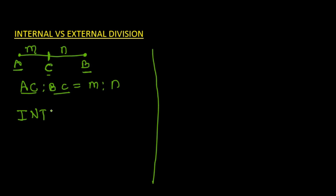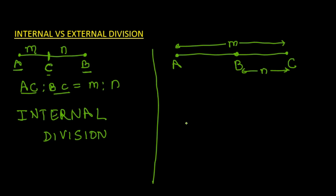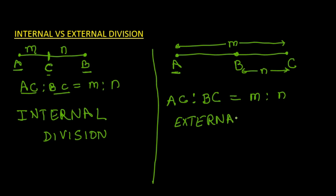Now if the point divides externally — if this is line AB and the point is lying outside the line — dividing externally in the ratio m:n means the ratio of the distance of endpoint A from the point of division to the distance of endpoint B from the point of division. This kind of division is called external division.